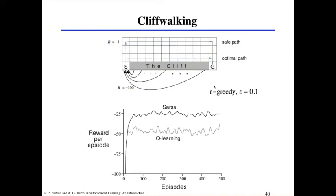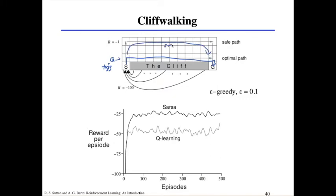Look at these policies and try to guess which algorithm picks which before working out what the graph means. The negative rewards tell the story: Q-learning is getting a lower overall reward, while SARSA is being safer. That's because Q-learning tries to take the shorter risky path along the cliff edge, whereas SARSA takes the longer safe path away from the cliff.